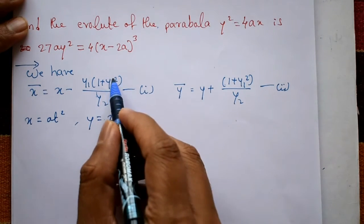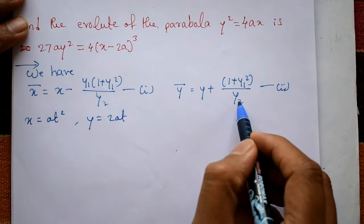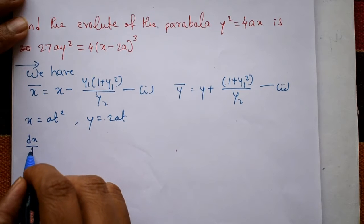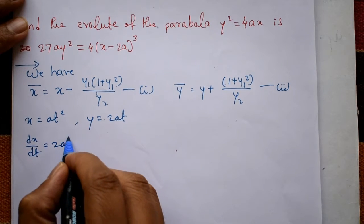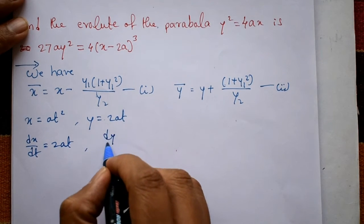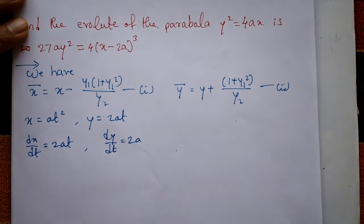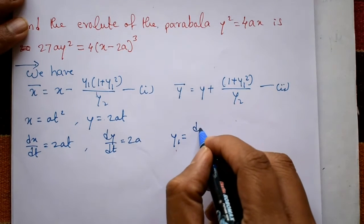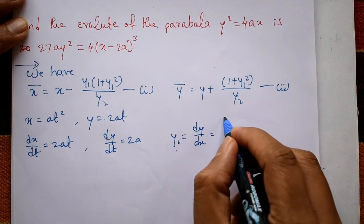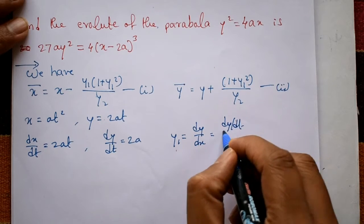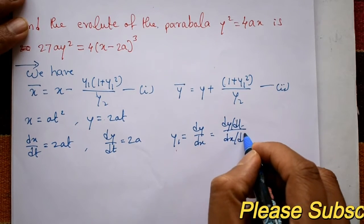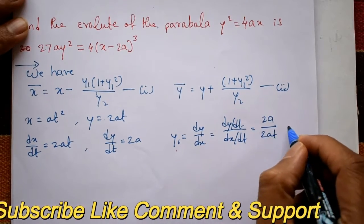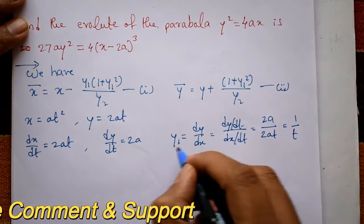Now find x̄ and ȳ. We need y1 and y2 to substitute into equations 1 and 2. Differentiating x with respect to t gives 2at, and differentiating y with respect to t gives 2a. So y1 = dy/dx = (dy/dt)/(dx/dt) = 2a / 2at = 1/t. Therefore y1 = 1/t.